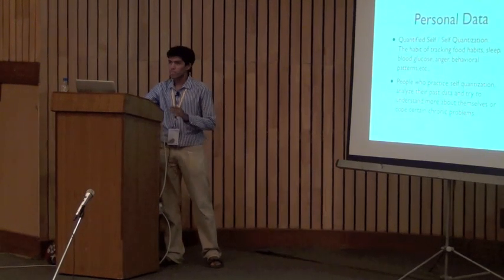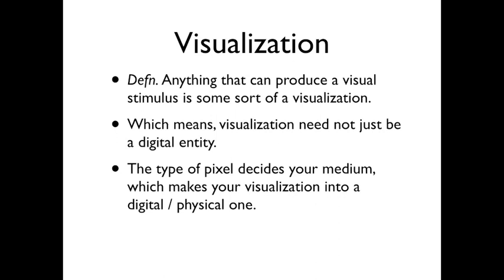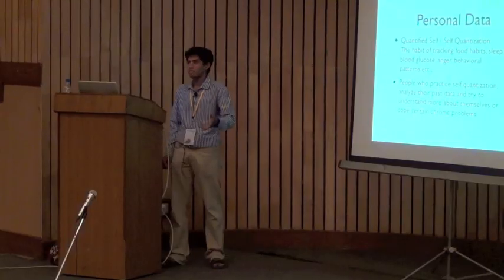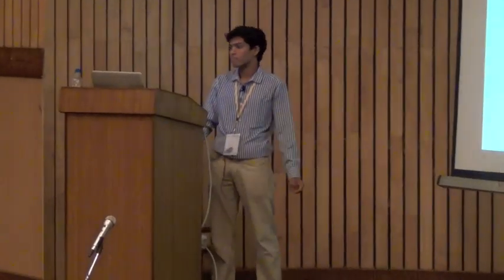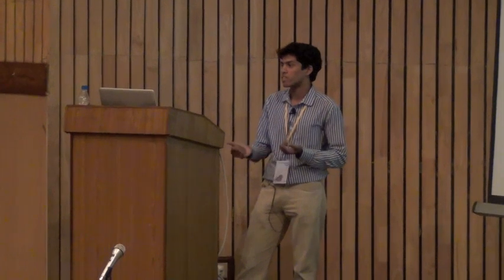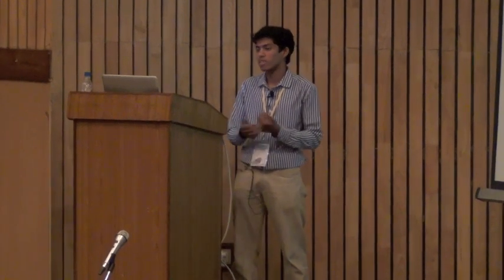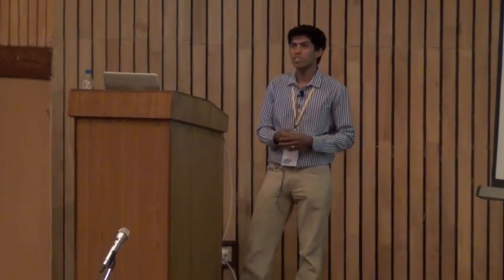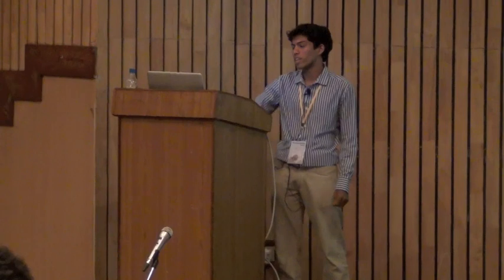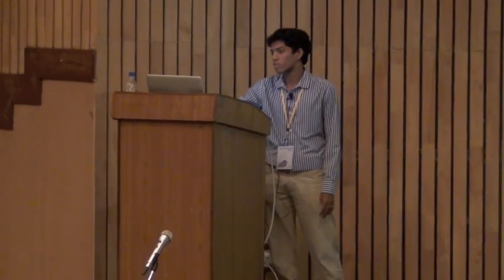After that, I'll go into my favorite part — visualization. Visualization can be a digital entity or a physical form. The majority of examples I'm going to give today will cover the physical part of visualization, because people are hardly covering the physical side of visualizations at this event. To me, visualization is anything capable of producing a visual stimulus — it may not just be a digital entity. The medium or pixel you choose to represent your data will convert your visualization into a digital or physical one.